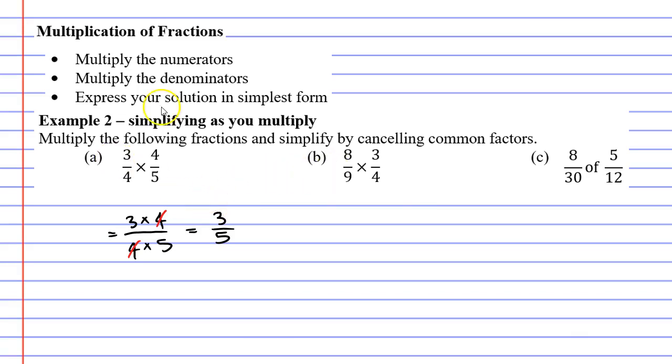In fact, when I completed question A, I showed a lot more working than I really needed to. I could have simply cancelled the 4s at the very beginning and gone, oh, that's easy, it's going to be 3 over 5.